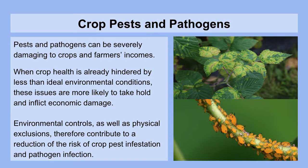Crop pests and pathogens can be severely damaging to crops and farmers' incomes. When crop health is already hindered by less-than-ideal environmental conditions, these issues are more likely to take hold and inflict economic damage. Environmental controls, as well as physical exclusions, therefore contribute to a reduction of the risk of crop pest infestation and pathogen infection, and there's some overlap with the environmental controls that we'll be talking about.